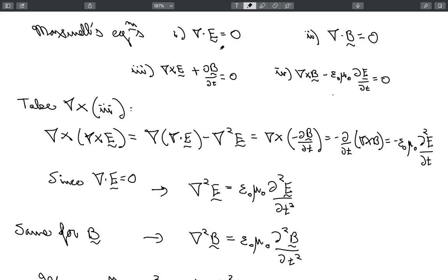So you see, invoking Gauss's law again in vacuum, so no free charges, this term vanishes. So we obtain that the Laplacian of E, component-wise, is epsilon zero mu zero times the second time derivative of E, component-wise.